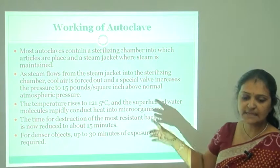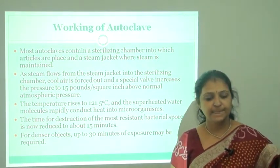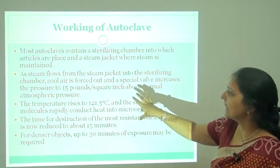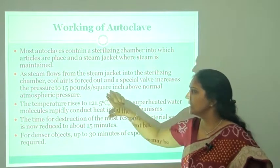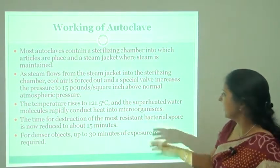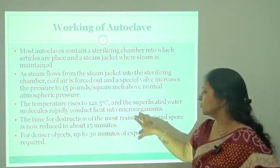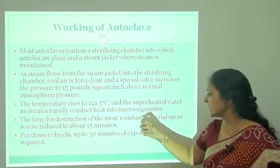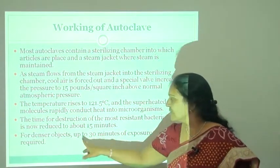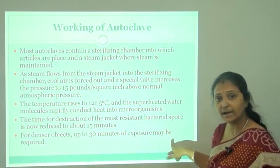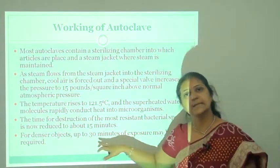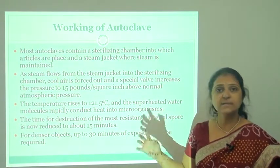Most autoclaves contain a sterilizing chamber in which articles are placed and a steam jacket where steam is maintained. As steam flows from the steam jacket into the sterilizing chamber, cool air is forced out and a special valve increases the pressure to 15 pounds per square inch above normal atmospheric pressure. The temperature rises to 121°C and the time for destruction of the most resistant bacterial spore is reduced to about 15 minutes. For denser objects, up to 30 minutes of exposure may be required because steam takes much longer to penetrate denser objects.